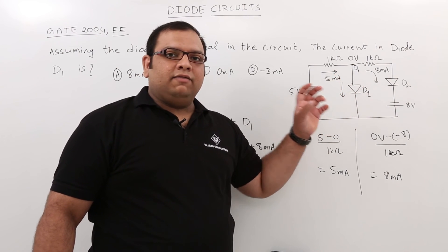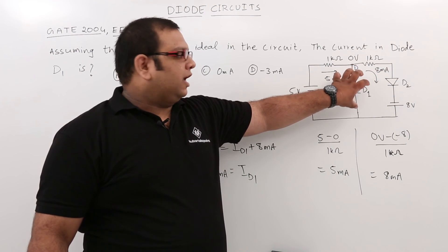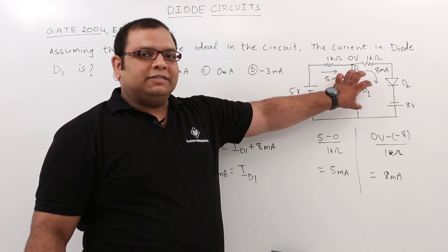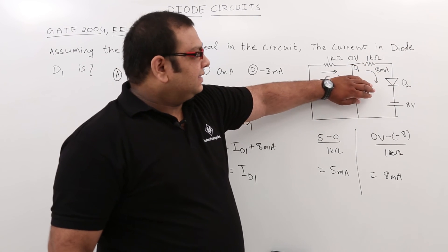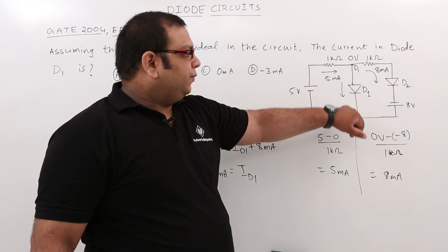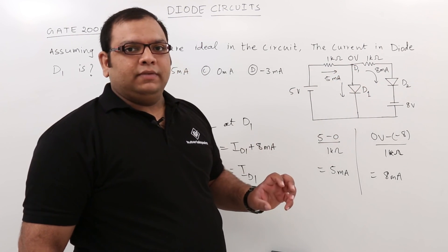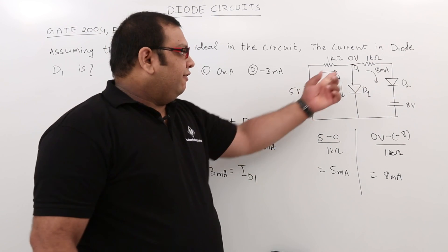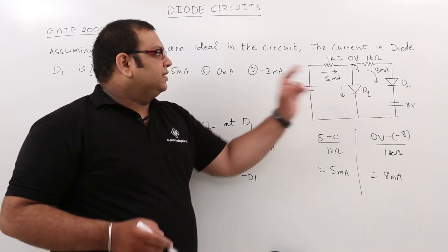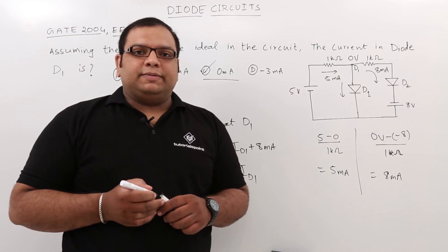Since we got a negative current, the initial assumption that D1 is forward biased is incorrect. D1 is actually in reverse bias, which means it acts as an open circuit. No current flows through D1. Therefore, the current in D1 is 0, and option C is the answer to this problem.